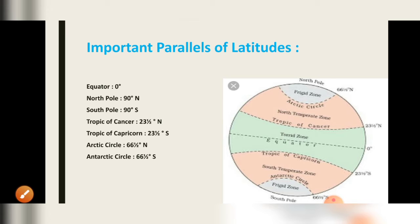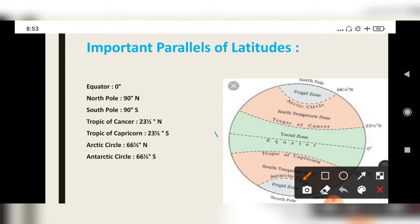Important parallels of latitudes: on a globe, there are many latitudes that are very important for the study of weather and the earth. These are imaginary lines, but they are defined on the basis of their characteristics. The equator is at zero degrees, the north pole is at ninety degrees north, and the south pole is at ninety degrees south.